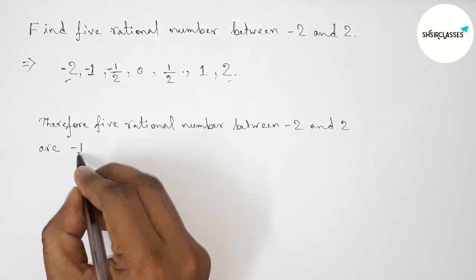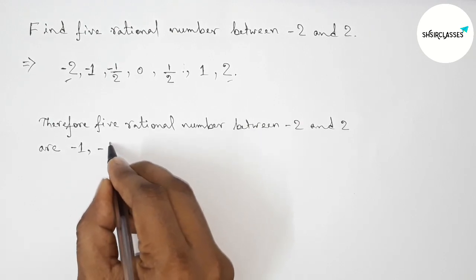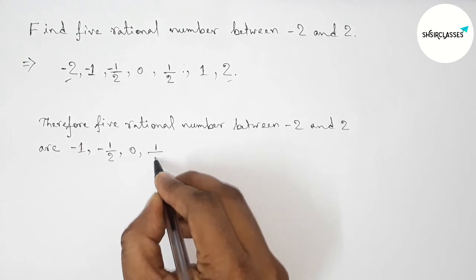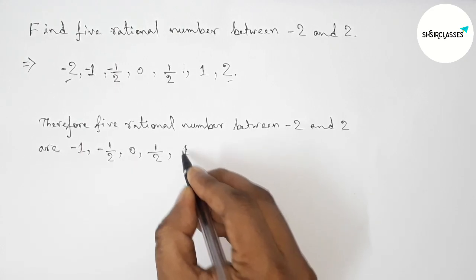So these are five: minus 1, minus 1/2, 0, 1/2, and plus 1.